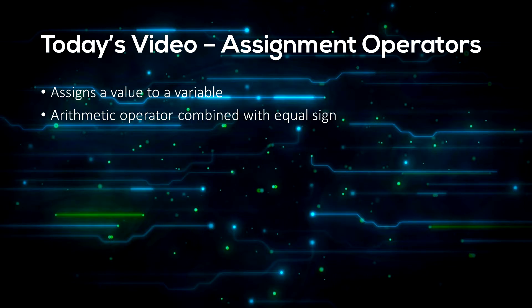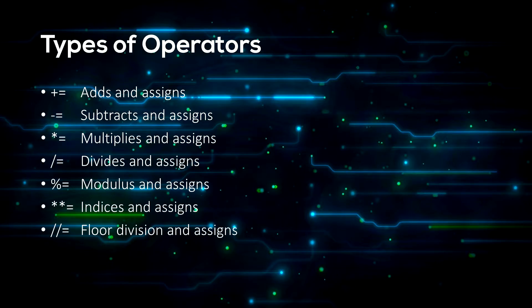Now there are assignment operators. The first and main one is just the equal sign — it assigns one value to a variable. Then there are all the arithmetic operators combined with the equal sign to assign a value returned from an arithmetic operator. For example, x plus equals 5 is the same as x equals x plus 5. We cannot just write x plus 5 because that doesn't assign the new number to x.